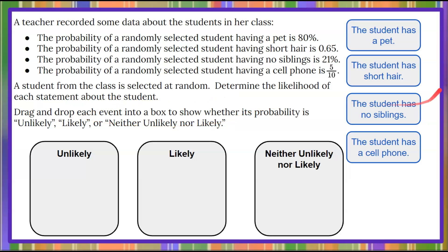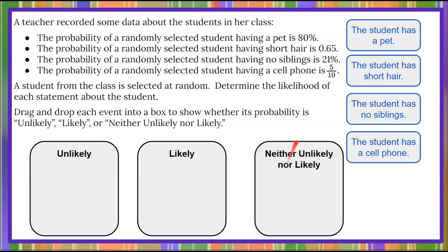We're given four statements to the right about the students, and we are asked to drag and drop each of these events into one of these three boxes to determine whether its probability is unlikely to happen, likely to happen, or neither unlikely nor likely to happen. Pause the video, determine where each of these four events would fall in one of these categories. Record your answers and then come back to hit play to see the solution. Good luck.